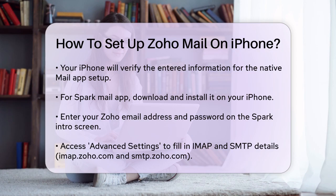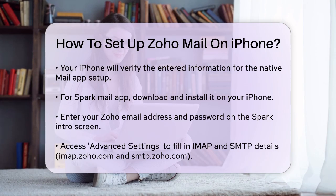Next, enter your Zoho Mail password and tap on Advanced Settings. Here you'll need to fill out the incoming mail server (IMAP) and outgoing mail server (SMTP) details. For Zoho Mail, these are imap.zoho.com and smtp.zoho.com respectively. After entering these details, tap Login to start using your Zoho Mail account with Spark.